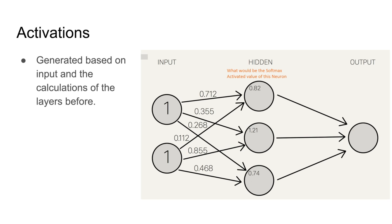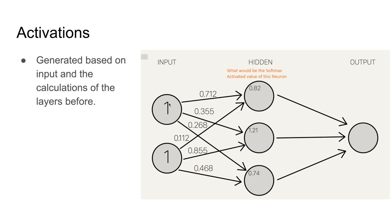Going into the depth of how each layer influences the next, we first have to look at activation. Activation is a number inside the circle — for example, the value shown in the picture is the activation for that specific node. Each activation is influenced by the previous layer's activation and the weights. For the input activation, that's dependent on the data given, which the computer scientist would have to put into the algorithm.